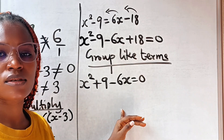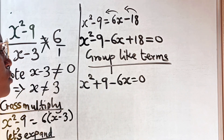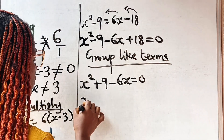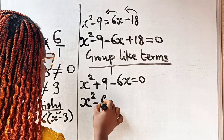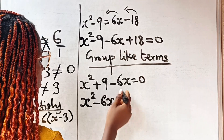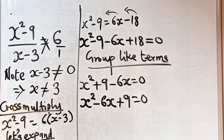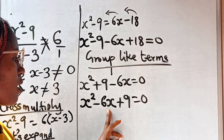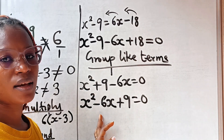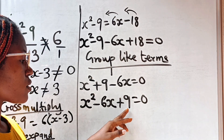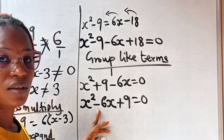Let's arrange this in ideal form: x squared minus 6x plus 9 equals zero. We need two factors of nine that when added together give us negative six.